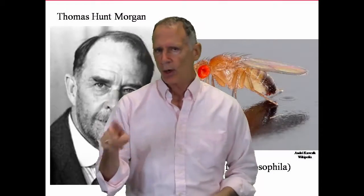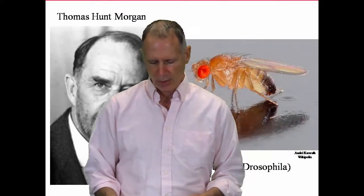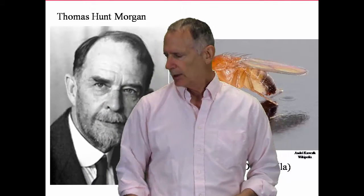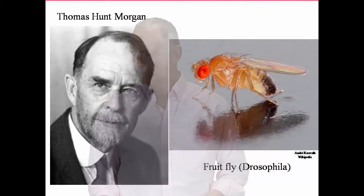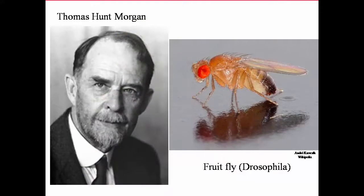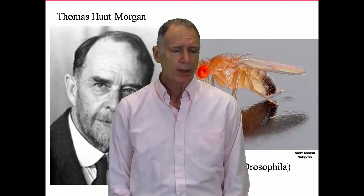I can't get into the crossover process until we talk a little bit about Thomas Hunt Morgan. He's in the early 1900s working at Columbia University. Morgan is pretty confident when he starts his work that Mendel is wrong.